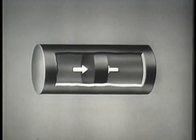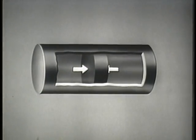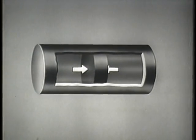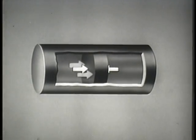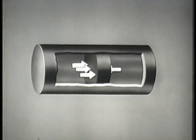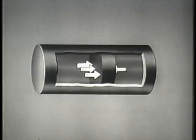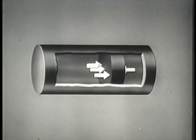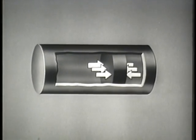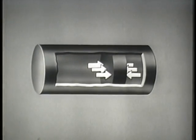Pressure differential is illustrated by this section of pipe. In the pipe is a movable block. The arrows on either side of the block represent equalized pressure. As pressure on one side of the block is increased, a pressure imbalance or differential is created in the pipe, moving the block in the direction of the lower pressure. The moment the pressure on the opposite side of the block is increased to equalize the pushing force, the motion of the block is stopped.